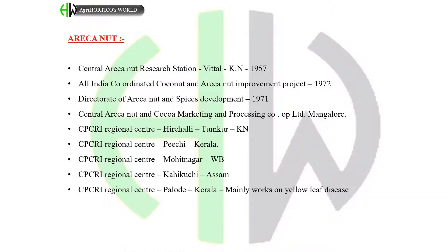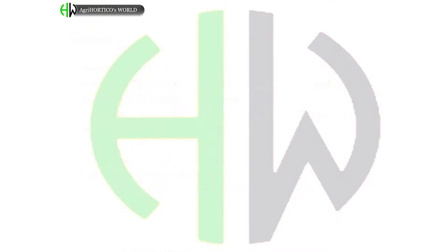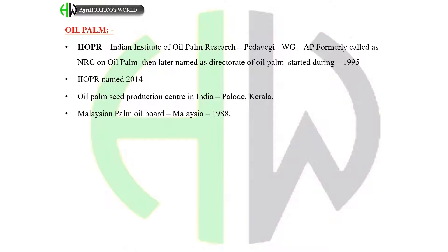CPCRI Regional Center at Mohitnagar, West Bengal. CPCRI Regional Center at Kahikuchi, Assam. CPCRI Regional Center at Palode, Kerala — mainly works on yellow leaf disease. Oil palm: IIOPR — Indian Institute of Oil Palm Research at Pedavegi, West Godavari, Andhra Pradesh.